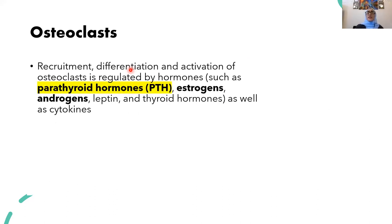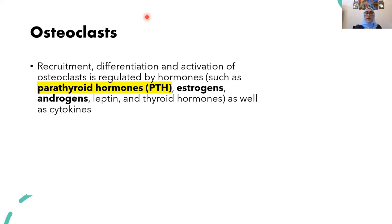Osteoclasts are also activated by different hormones. The most important is parathyroid hormone (PTH). Other important hormones include estrogens and androgens, but for this lecture we'll focus on parathyroid hormone.